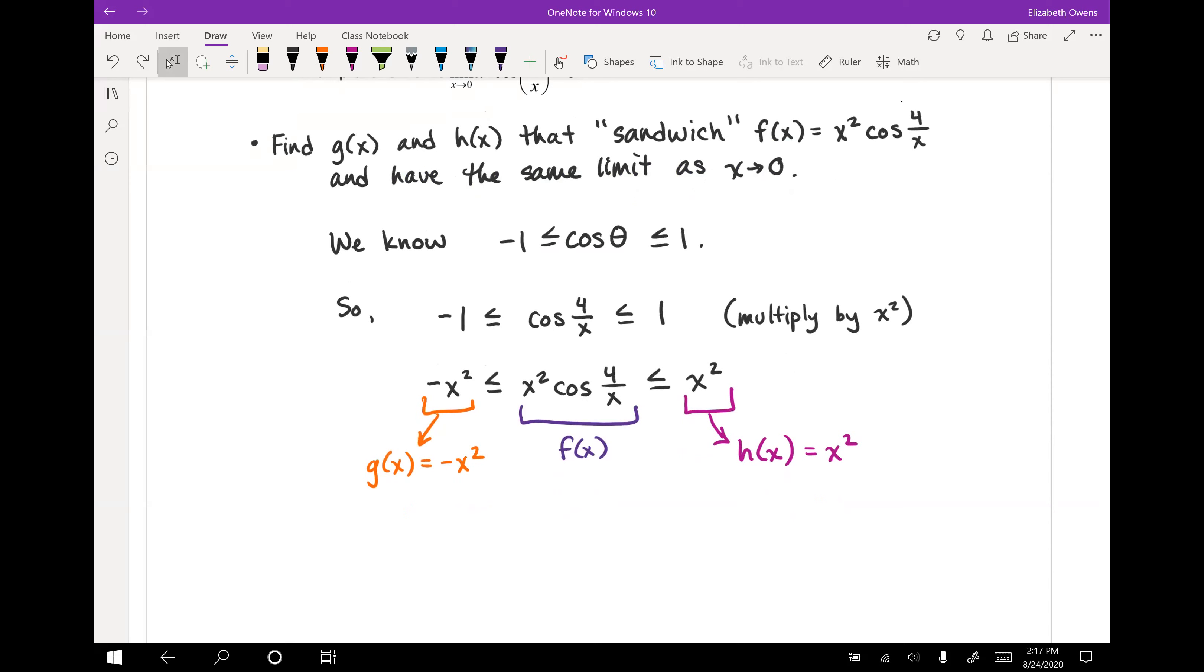So let's check the limit as x approaches zero of g of x, which is negative x squared. Well, we're fortunate here. We can just use direct substitution. Zero is in the domain of negative x squared. No problem. We can just plug it right in and we get zero.